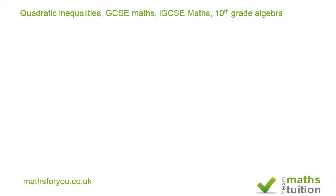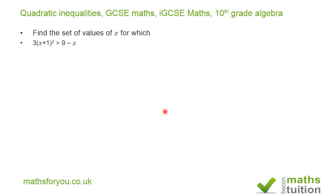Hello and welcome to this exercise on quadratic inequalities based on an IGCSE maths question. I'm not trying to answer the question — I'm trying to explain how we got the answers. It says: find the set of values of x for which (3x + 1)² is greater than 9 minus x.